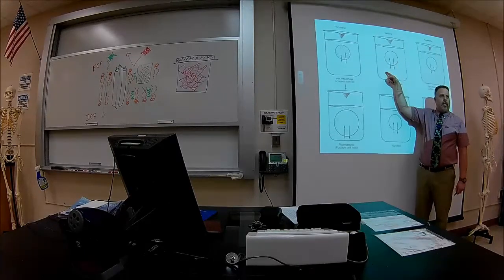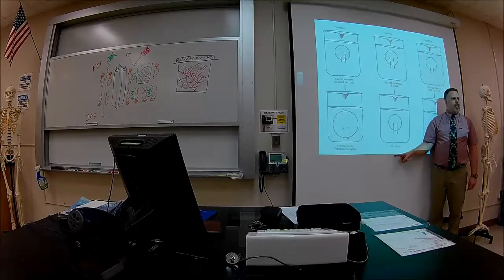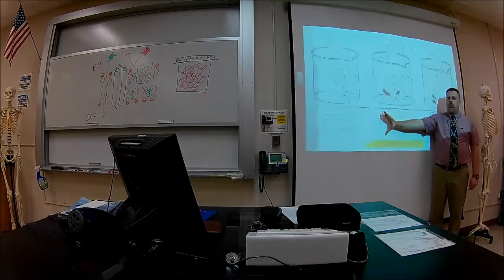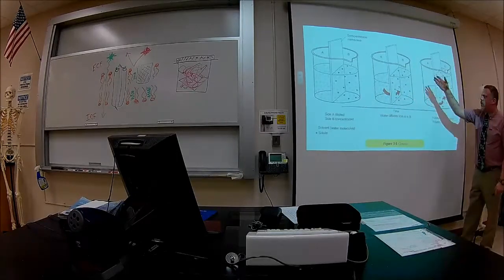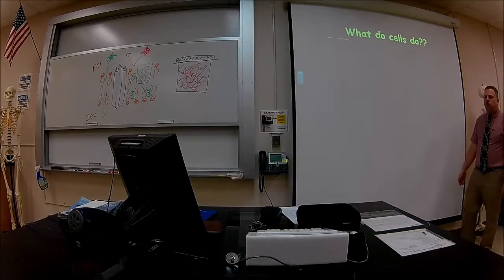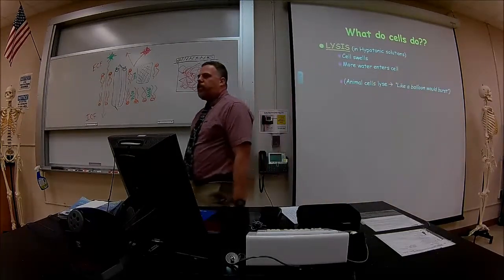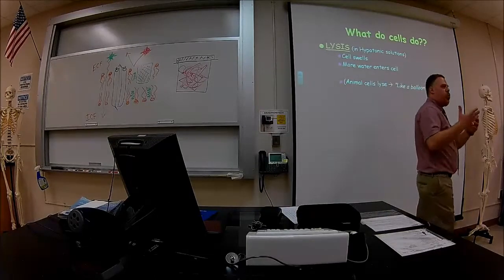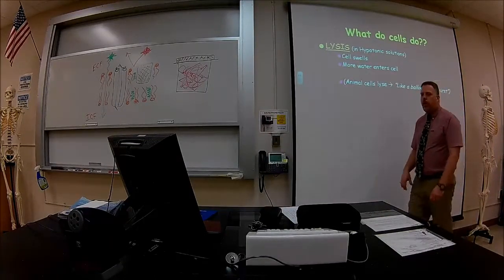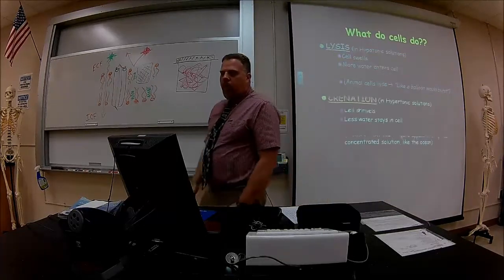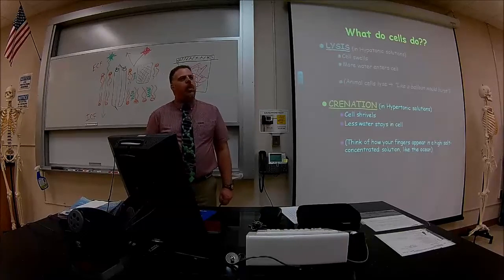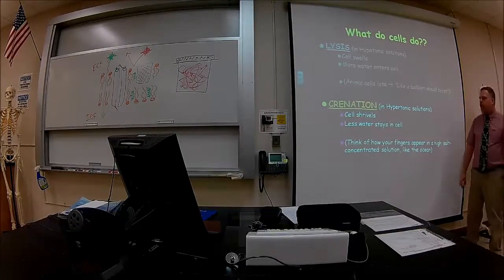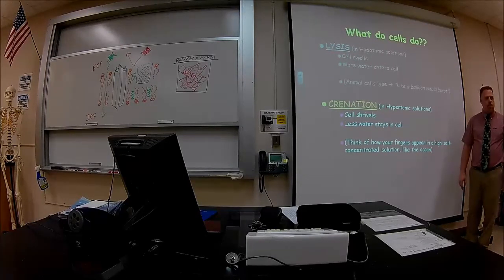Isotonic is when there's equal concentration inside and outside the cell — no net movement of water occurs. That's the ideal state. To summarize: in a hypotonic solution, cells lyse (burst) or swell as more water enters; in a hypertonic solution, water leaves the cell and it shrivels or crenates — like your fingers in the ocean.